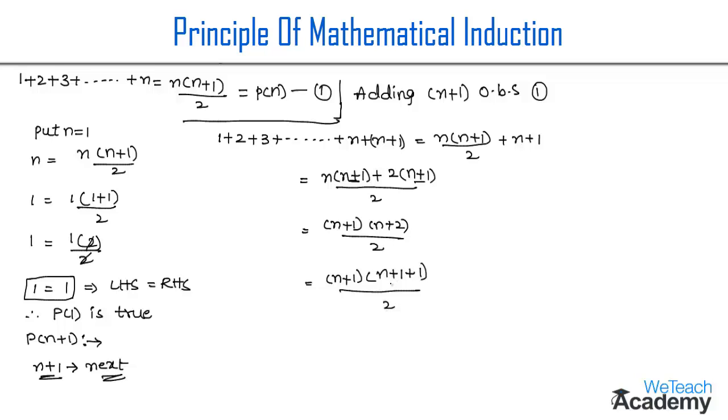We observe that P(n) is true for P(n+1), and therefore we can conclude that P(n+1) is true. Hence, we have proved the formula for sum of n terms, 1 plus 2 plus 3 plus so on plus n equals n into n plus 1 divided by 2 for all n belongs to natural numbers. This was the proof of n natural numbers.